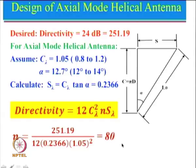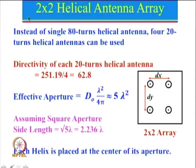Now, n = 80 is a very large number, which means the entire helical antenna length will be very, very large. So instead of using n = 80, the other option is that we can use an array of helical antennas. Here is an example of a 2 by 2 array, which has a total of 4 elements. So what we can think about is: instead of using one single 80-turn helical antenna, four 20-turn helical antennas can be used.